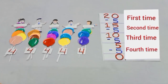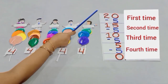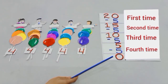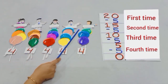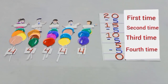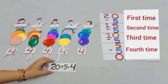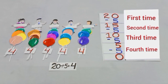So, dear students, we had 20 balloons and when 4 times we divided equally 5 balloons to these 5 children, each child got 4 balloons. And here is the answer for our question: 20 divided by 5 is equal to 4.